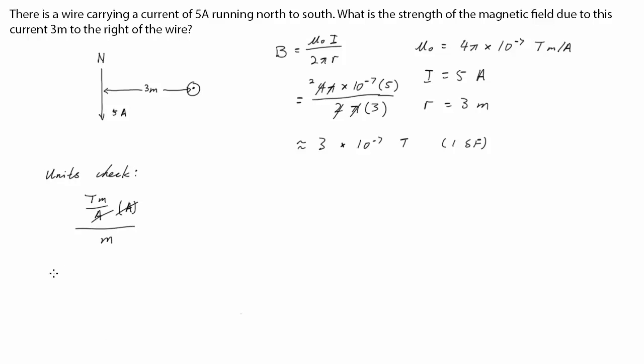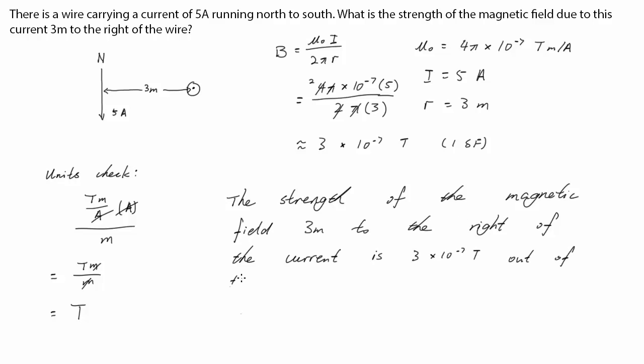The amps cancel, so this simplifies into tesla meters per meter. And then the meters cancel, which gives us teslas. Magnetic field is measured in teslas, so the units check out. And don't forget direction.